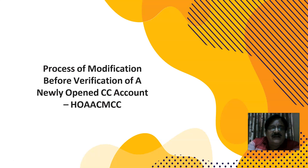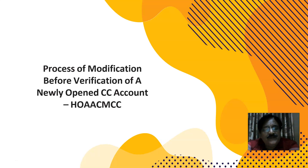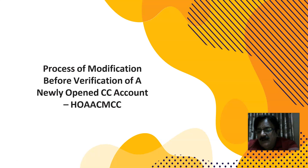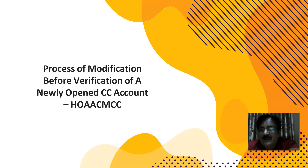A maker can modify the account even before verification using the command HOAACMCC — M for modification before verification. Previously, if an account number was generated by the maker and a mistake was found, it had to be verified, then modified, then verified again. Now the same person can create, modify before verification, and then verify — so one step has been reduced.